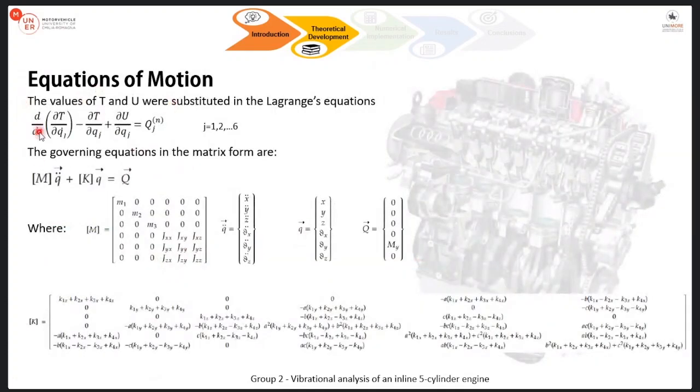Afterwards, we used the Lagrange formula and we obtained the equations of motion in this way, in the matrix form. It is fundamental in particular to notice two things. First of all, the form that the forcing values has. It is a vector in which all the components are zero with the exception of this component here, which is the pitching moment, the aforementioned pitching moment, the cause of rotation around the y-axis. The second very important thing is to notice how complex the stiffness matrix is. We had to, in order to develop a precise calculation, we had to find a way to simplify it.